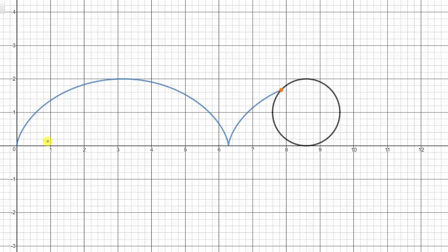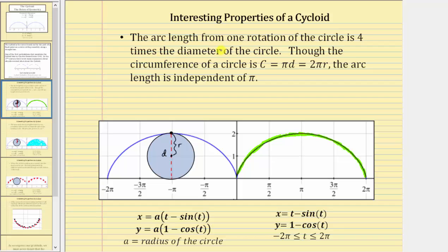And now let's look at some interesting properties about the cycloid curve. First, the arc length from one rotation of the circle is four times the diameter of the circle. So this highlighted arc length is formed from one rotation of the circle along the horizontal axis. This arc length is equal to four times the diameter of the circle.